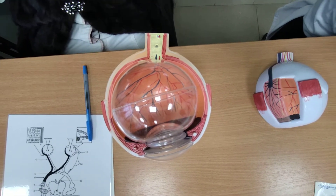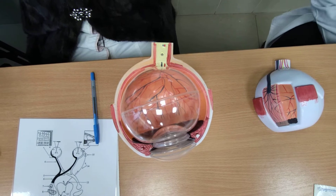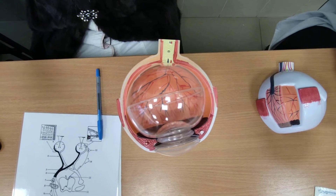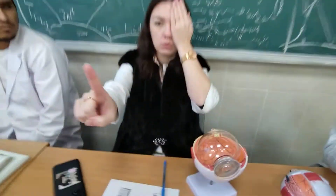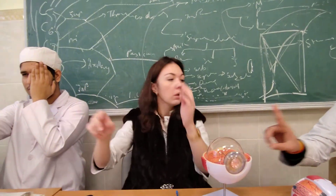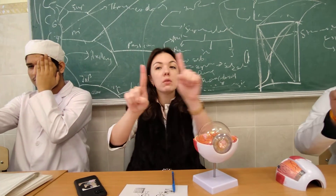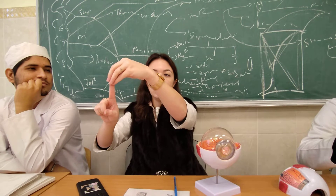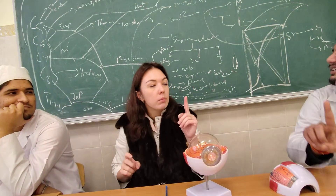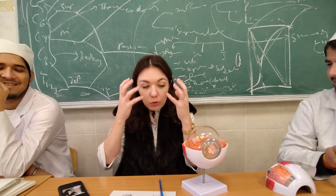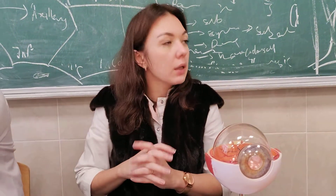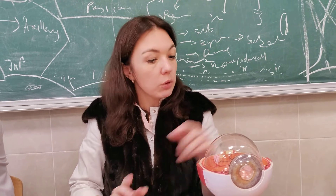Each of us has a blind spot, and it's easy to check. Close one eye, look forward, and move your finger horizontally at the level of your pupil without intentionally looking at it. You will find a place where the finger disappears and then reappears. We have two eyeballs, so the blind areas are covered — when we look with both eyes, we don't notice the blind spot. There are no photoreceptors at the blind spot because it is the location of the optic nerve disc.